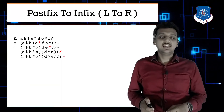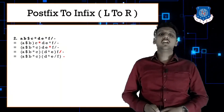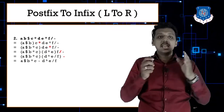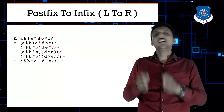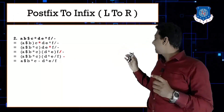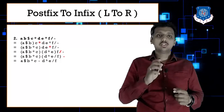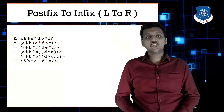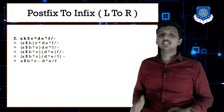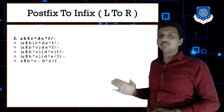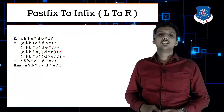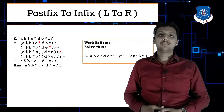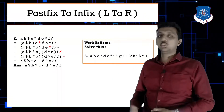Finally, we have minus. Put it between (a$b)*c and (d^e)/f. The final answer is: (a$b)*c - (d^e)/f. The next example you need to solve by yourself.